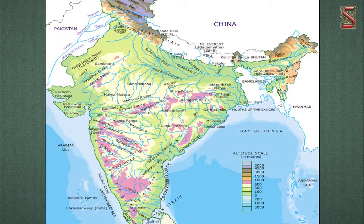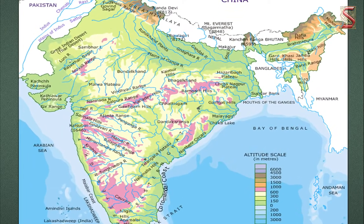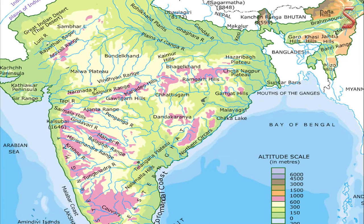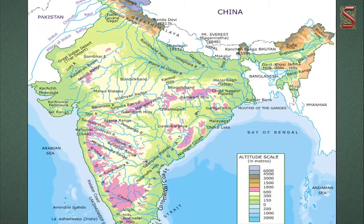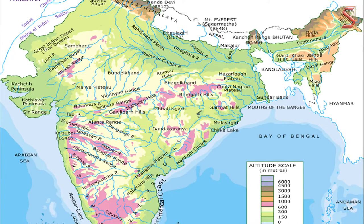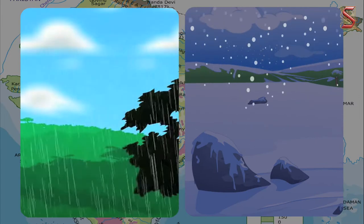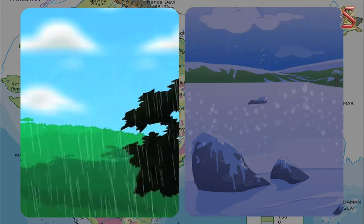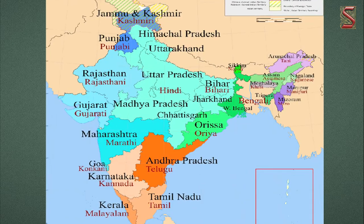First of all let us know what is a map. What is the difference between a map and a photograph of the same place taken from space? A map is a representation of a whole or part of an area that describes spatial relationships of specific features. Unlike a photograph, a map does not show real features, but a photograph may not be able to show the amount of rainfall, the temperature, or the languages that people speak there as a map shows.